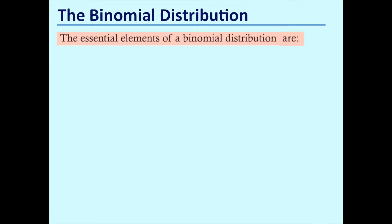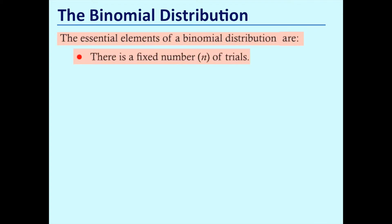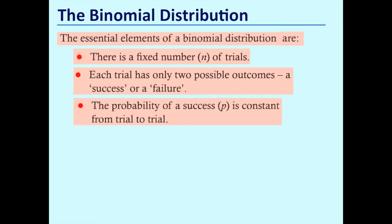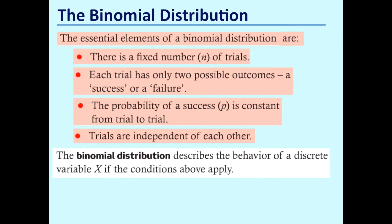Before we start, let's have a look at the essential elements of a binomial distribution: there is a fixed number of trials, which we will mark using n; each trial has only two possible outcomes, a success or a failure; the probability of a success, p, is constant from trial to trial; and trials are independent of each other. If all these conditions apply then we're looking at a binomial distribution for a discrete variable x.